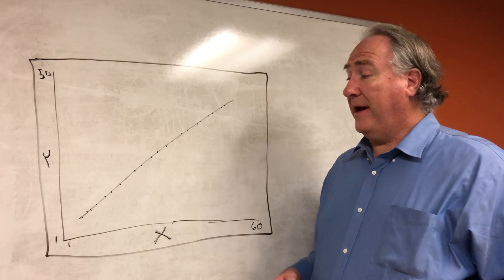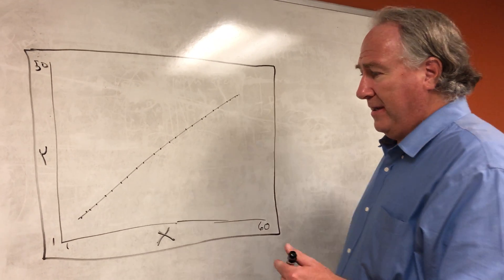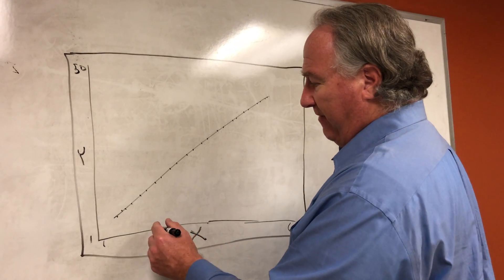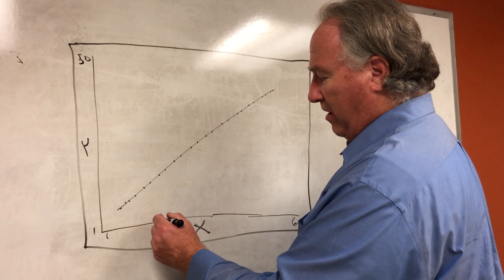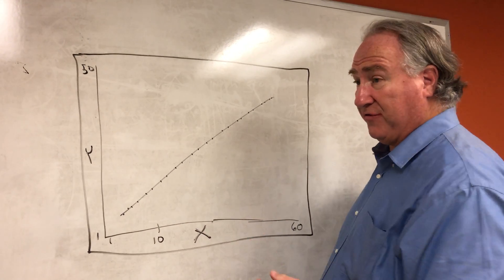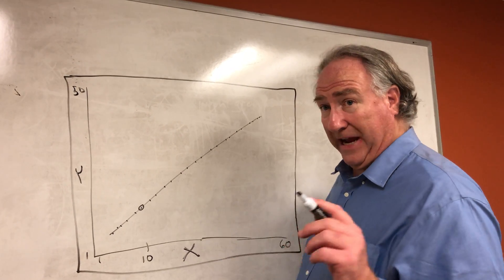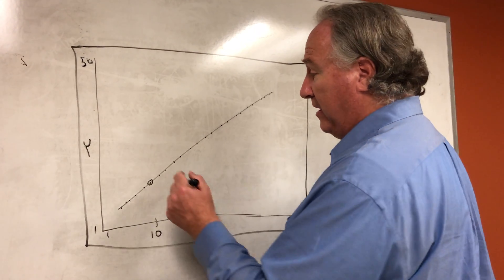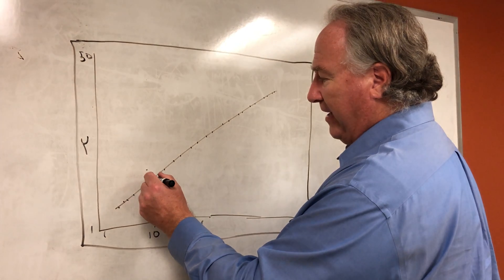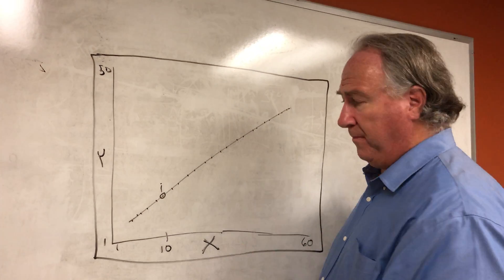Our predicted values come out of the model, but each person in our sample also provides an actual observed score on Y, which may differ from the predicted value. For example, a person scores 10 on X, the model predicts a certain Y value, but their actual observed score is different. That difference is the error in prediction, otherwise known as the residual.